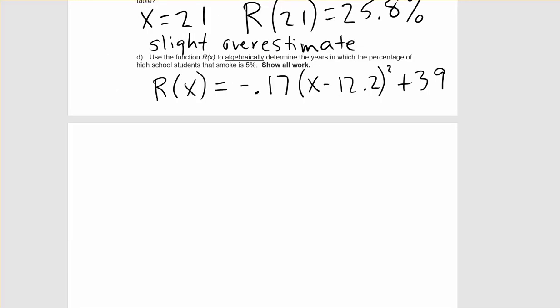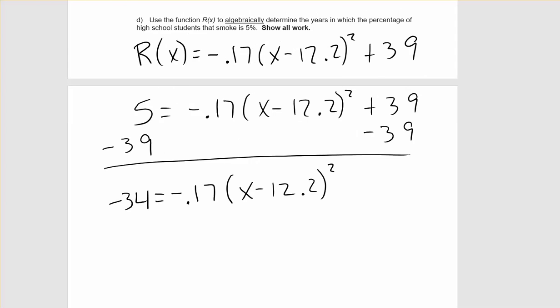The last thing we are asked to do is use our function R of X to algebraically determine the years in which the percentage of high school students that smoke is 5 percent. So remember our percentages were the Y values, and so what we are going to do to solve this in this case is replace R of X with the value that we have, which is 5, and we are going to solve for the X values which represent the years. To solve for X we need to isolate the square part of our equation. Our first step is going to be to subtract 39 from both sides.